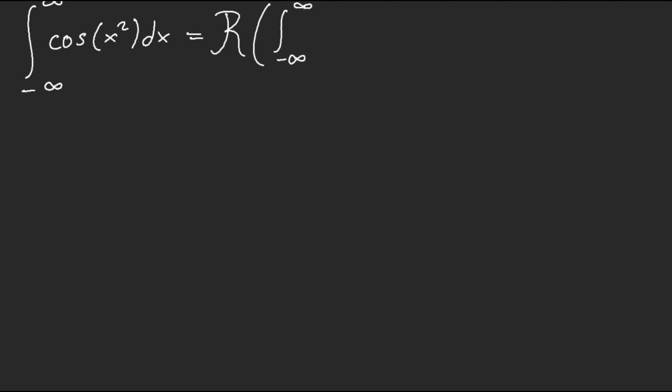Now we have the Fresnel integral — that's how you pronounce it — and a lot of physics people know what this is. We have a cosine, so we're going to use the real part of the function. The integral becomes the real part of the integral of e^(ix²) dx.